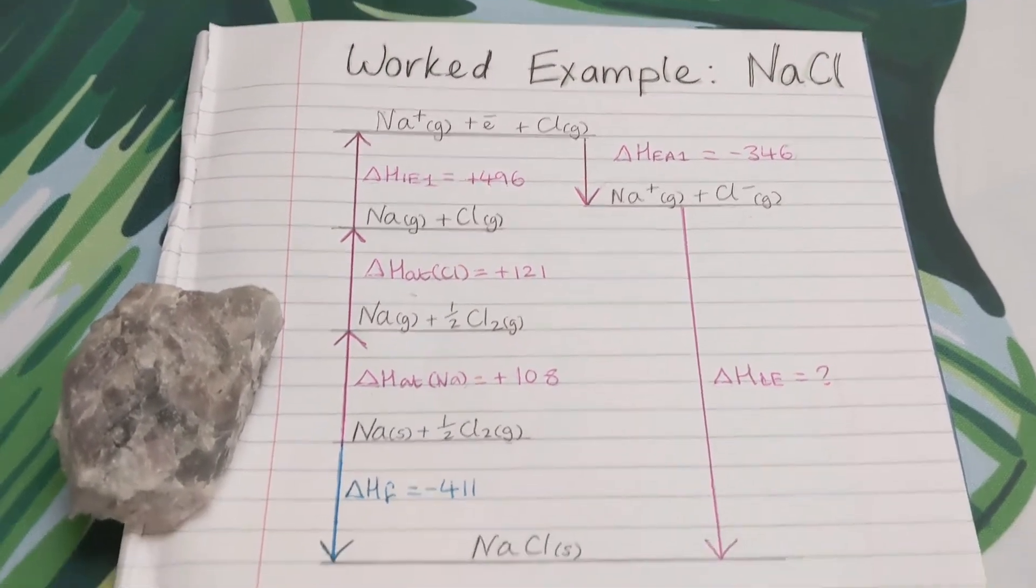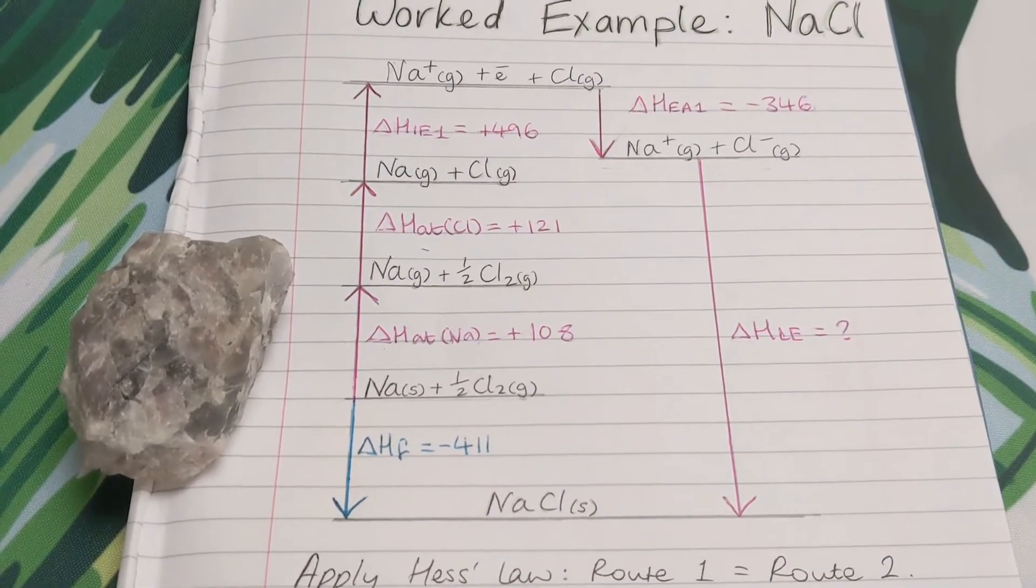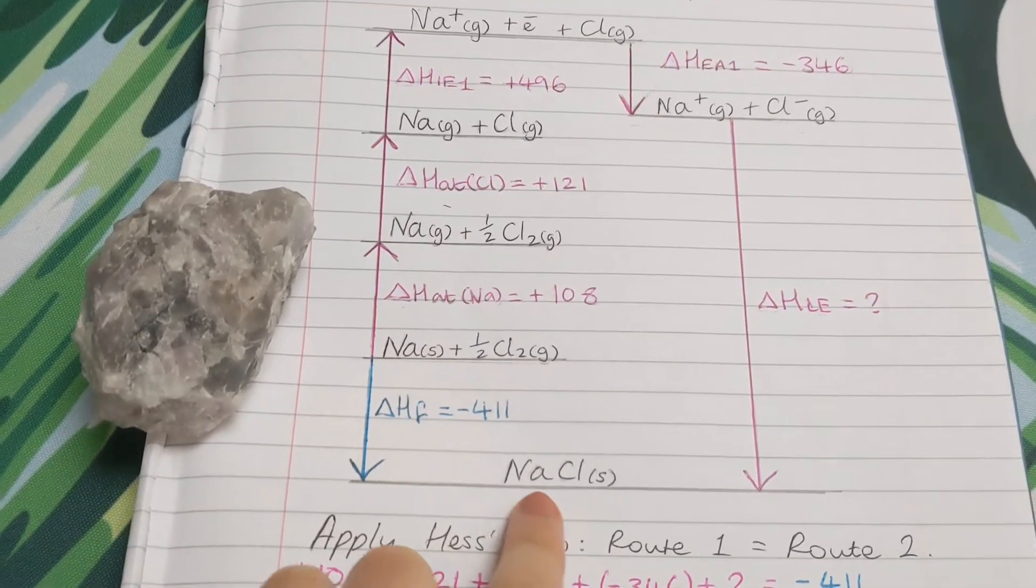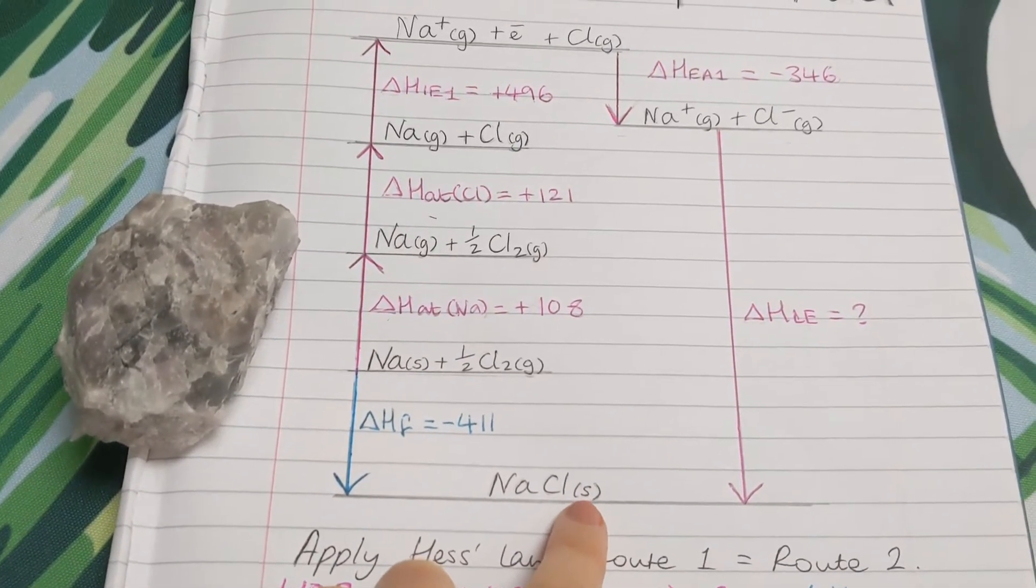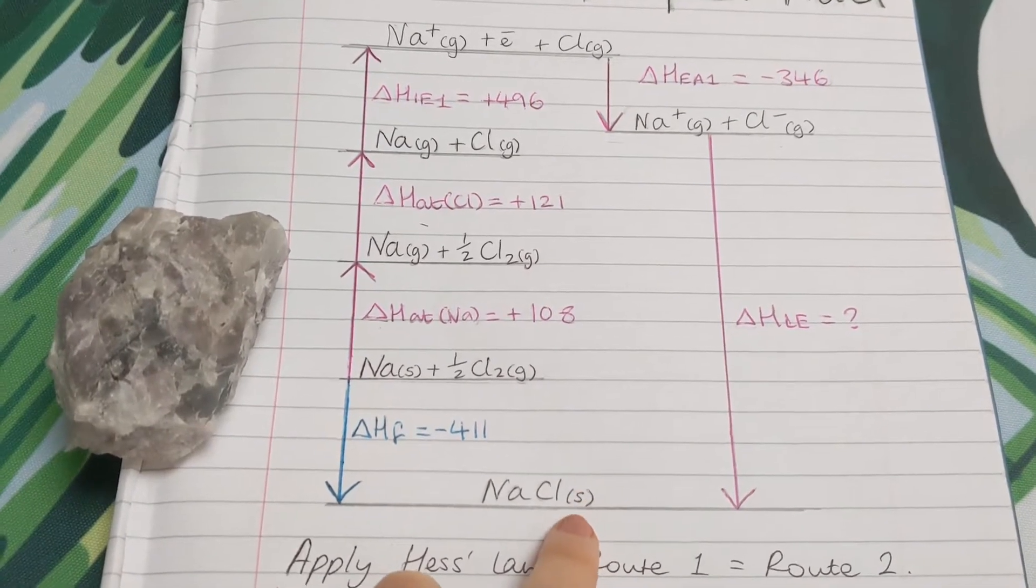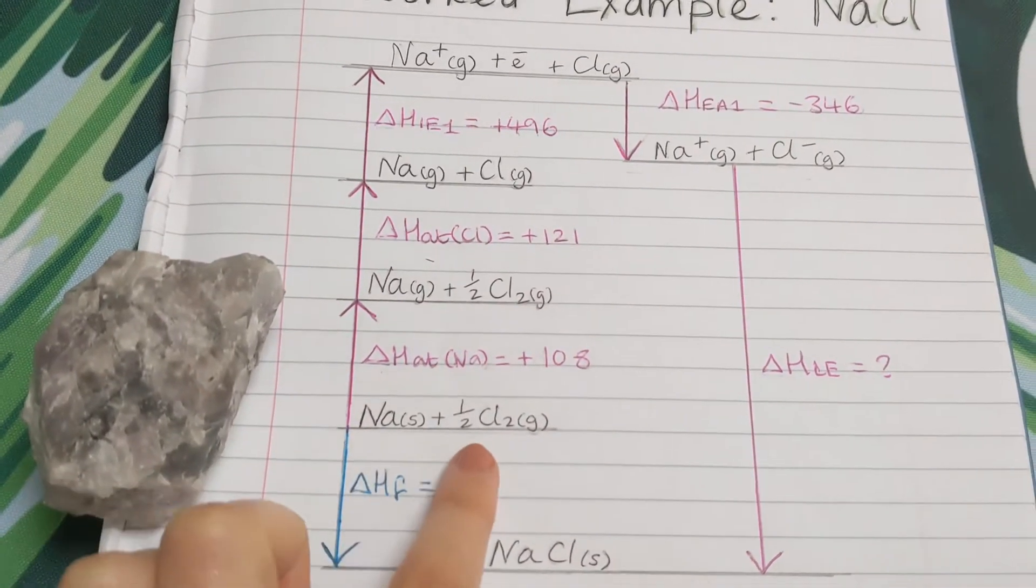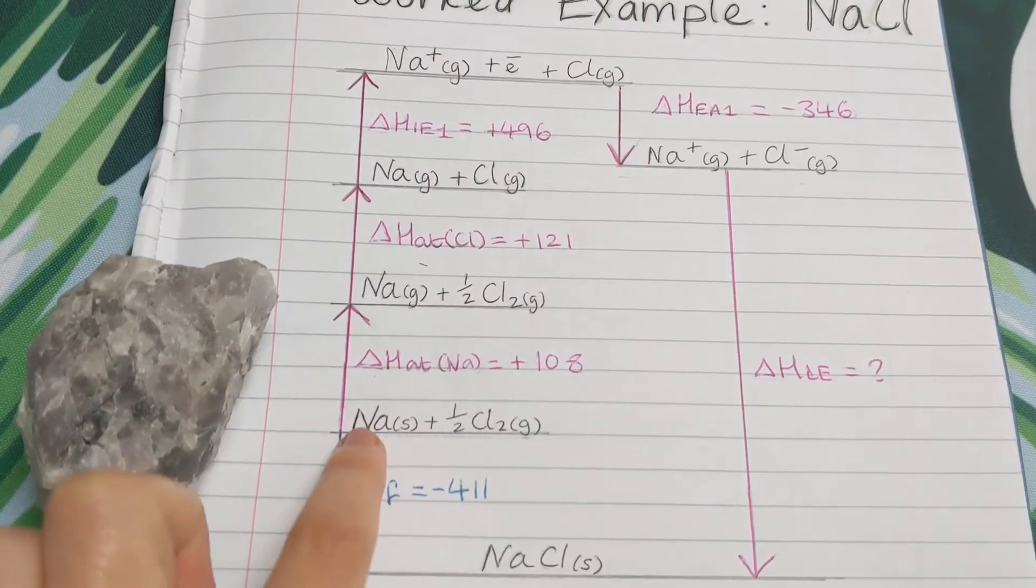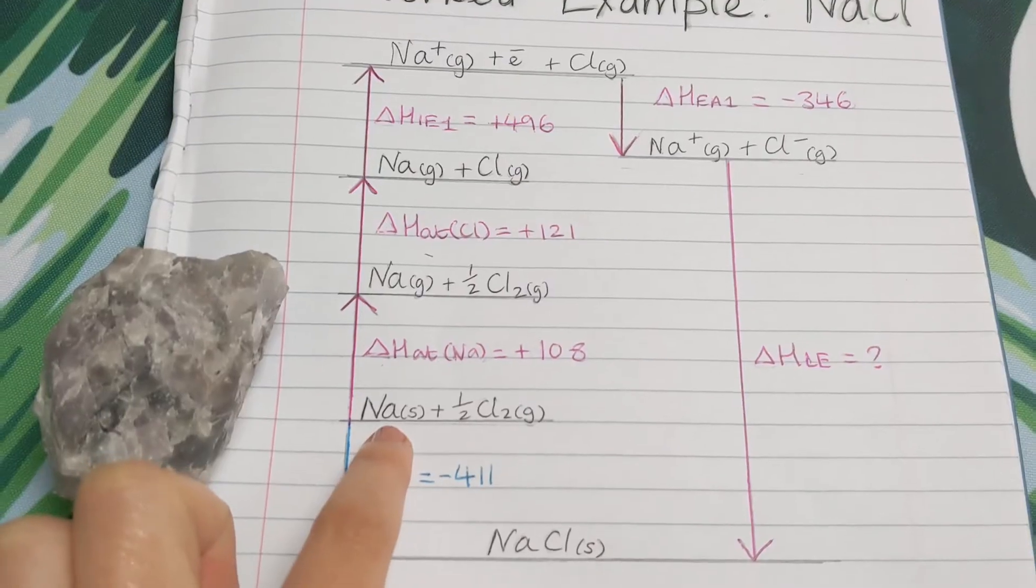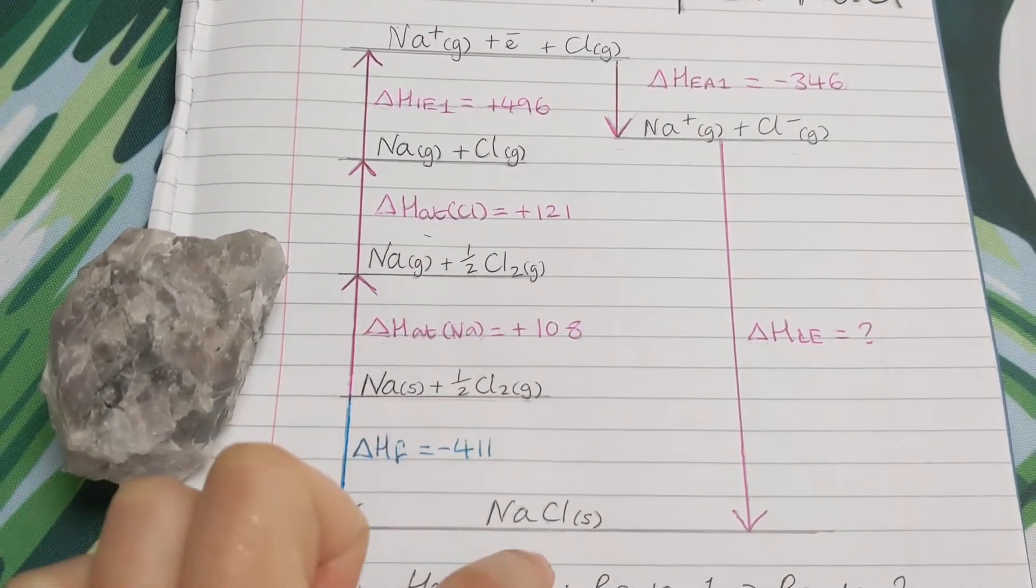Okay, so in this cycle, I've drawn out the full thing. We want to write the formula of our ionic compound at the bottom and in brackets, we need to include state symbols. So little s in brackets just means solid. And then in the step above, we've got the formula of the elements in their standard states. So sodium solid plus chlorine gas, which is forming the ionic compound.